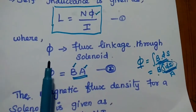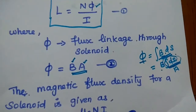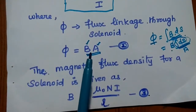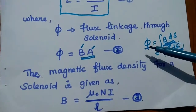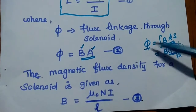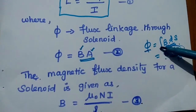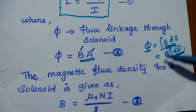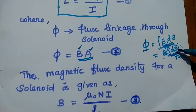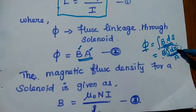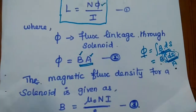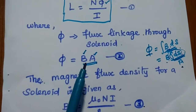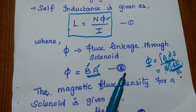What is phi? Phi is nothing but flux linkage through the solenoid. The formula for phi is equal to B into A. Because we know the relation between flux and flux density: phi is always the surface integral of flux density. We can take B outside, so integral of dS is nothing but the area of the solenoid. Therefore phi is equal to B into A. We can consider this as the second equation.